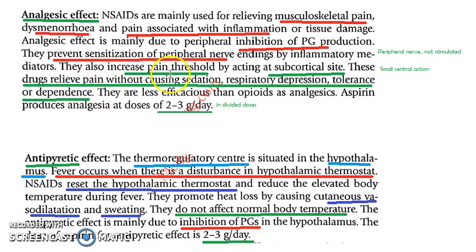At the central level, a subcortical site also increases the pain threshold, so you can tolerate pain up to some degree. This is not as effective as an opioid analgesic, but it helps manage day-to-day pain from dysmenorrhea, inflammation, or musculoskeletal pain. The advantage of these drugs is they relieve pain without causing sedation, respiratory depression, tolerance, or dependence.